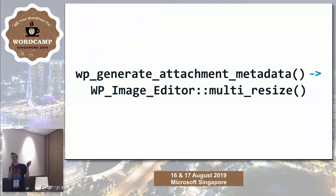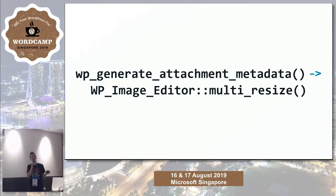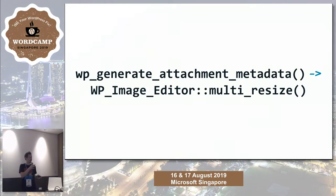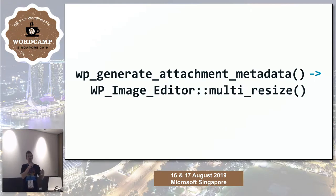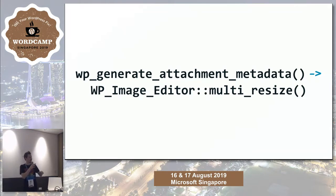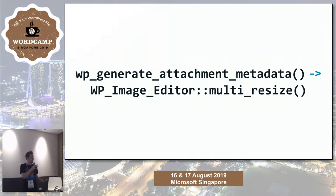This is a super-light description of the way this works. There's a function called WP_generate_attachment_metadata that does a lot of processing of the image. One of the things it has is a big call to a function called multi_resize, which takes the image and does a big set of resizes in succession — all of the sizes at once. This is actually an instance of WP_Image_Editor rather than a method.